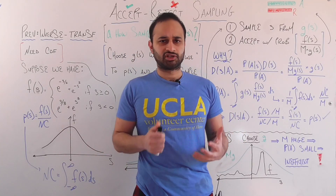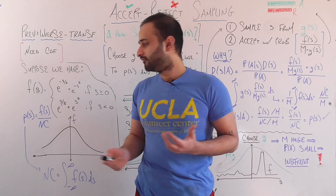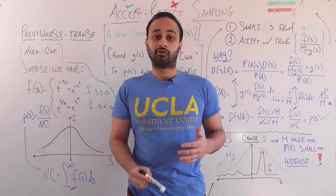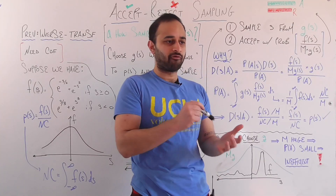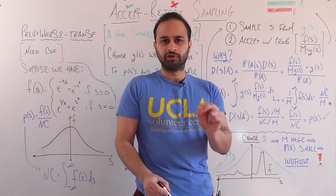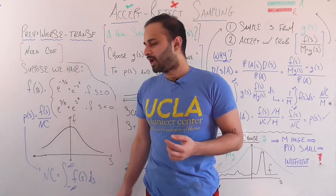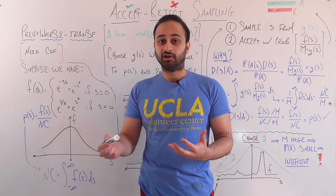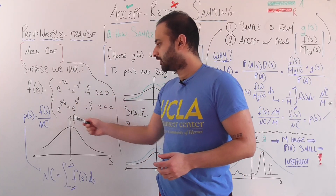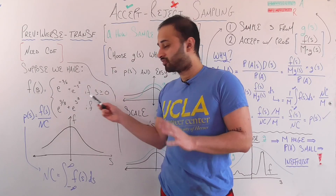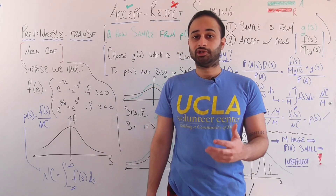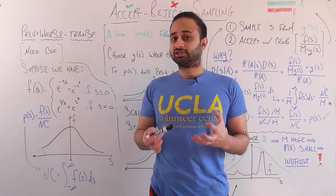Now, we don't know P of S, and that's where this method starts to get interesting. We do know, however, the numerator of P of S. So P of S is equal to some numerator F of S divided by Nc, where Nc stands for normalizing constant. This is actually a very common thing we see in probability and statistics, especially in research, where we know the numerator of some probability density function but not the denominator. Nc would simply be the integral of the numerator between negative infinity and infinity. But taking that integral can be very difficult or even impossible, so we often know the numerator of the PDF but don't know the explicit form for the normalizing constant.